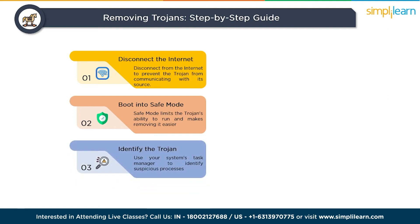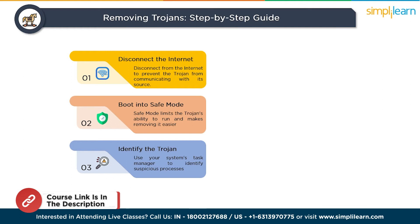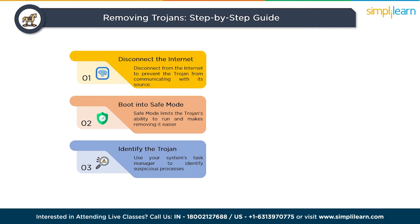The third step is identifying the trojan. Use your system's task manager to identify suspicious processes and make a note of any unfamiliar names. Look for processes that use a significant amount of system resources or have suspicious names. Keep an eye out for processes that you don't recognize or that seem unrelated to your usual programs.